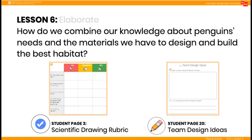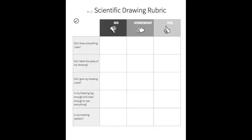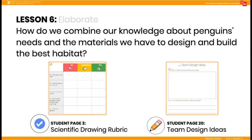After giving time to choose the best idea, direct student teams to student journal page 20, Team Design Ideas. Ask students to draw a sketch of the team's design and label it. It may be helpful to return to the scientific drawing rubric on student journal page 3 to remind them of what should be included in a scientific drawing. Once the teams are finished with their drawings, they can pair and share their design with another team, explaining how they believe it will solve problems for people and penguins at the zoo.